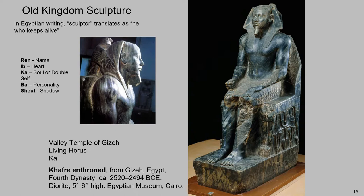Sculpture is found all over ancient Egypt. It is found in temples, it is found in tombs, it is found in palaces. It was used to portray images of the gods, it was used to commemorate the dead, as is the case with this particular sculpture.